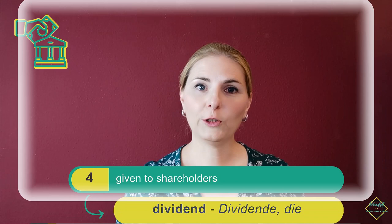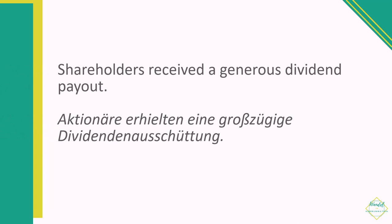Number three: if you borrow money from the bank and you have to pay it back with interest — Zinsen — then you take out a loan, einen Kredit. So you could say: 'They applied for a loan to buy a new car.' Number four: if you own parts of a company, which means you are a shareholder, the money that is paid out to you is called a dividend — Dividende. For example: 'Shareholders received a generous dividend payout.'